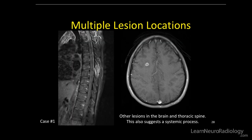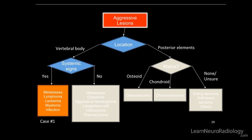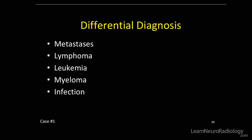The patient also has lesions in other locations — in the thoracic spine and in the brain. So this definitely is a systemic process; it's widespread. That leaves us with the first box, and that's our differential for this case: metastasis, lymphoma, leukemia, myeloma, and infection.